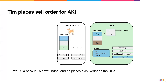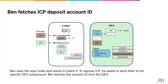Tim can then use these funds to place an order to trade for ICP. Our second user, Ben, sees the open order and wants to match it. First, he calls GetDepositAddress, and the DEX will return a subaccount specific to Ben where he can send ICP.